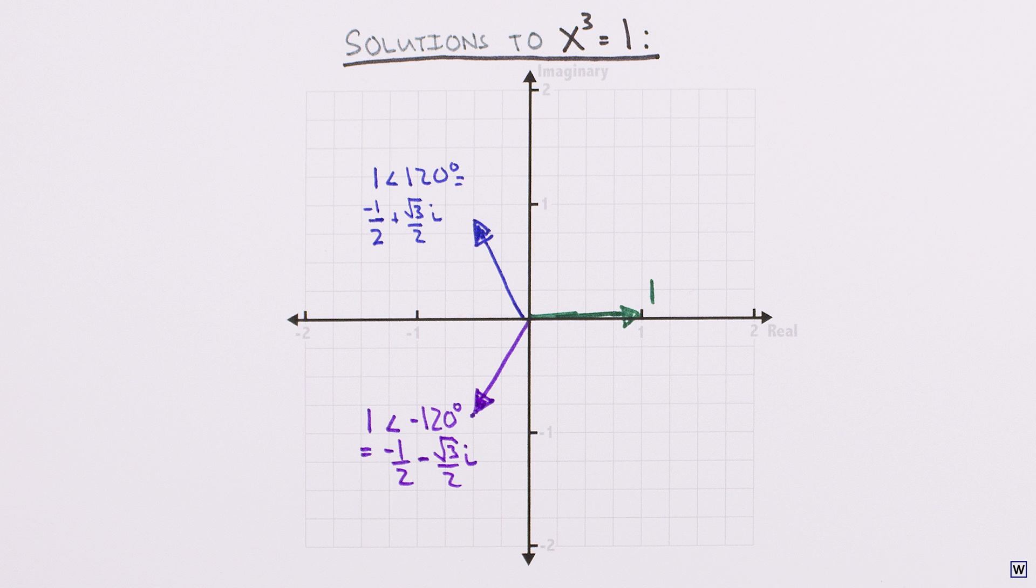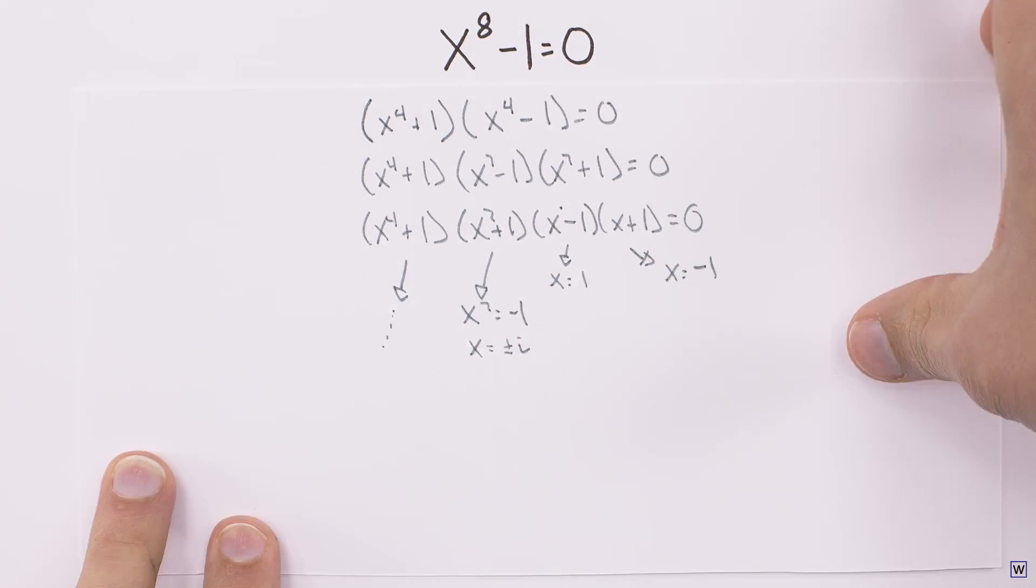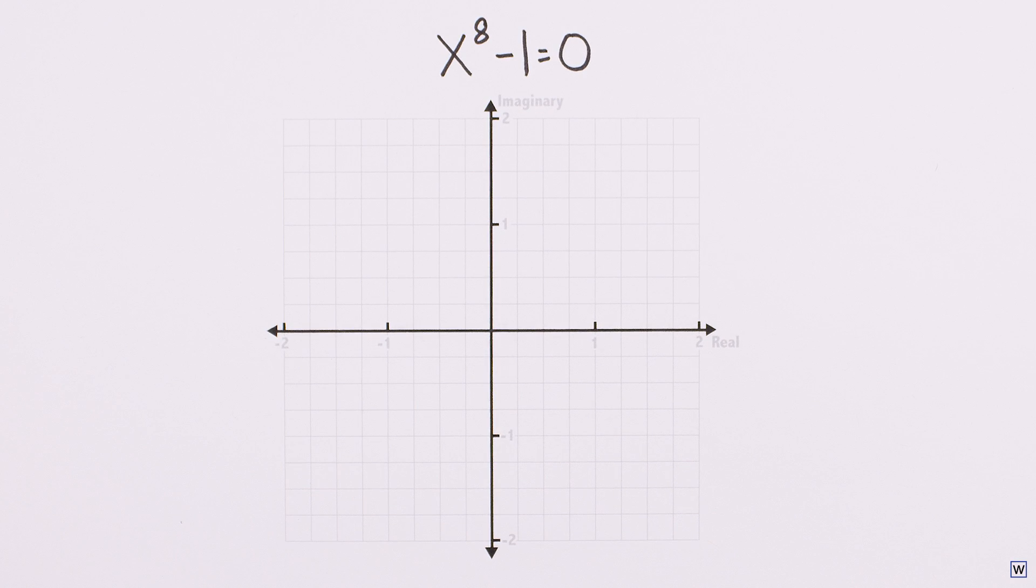For example, what if we change the power in our original problem to 8? That is, x to the power of 8 minus 1 is equal to 0. We could try to factor this, or turn to our complex plane and see that just like our last problem, where we needed to divide the unit circle into 3 equal portions, we need to, in this case, divide our circle into 8 equal portions.